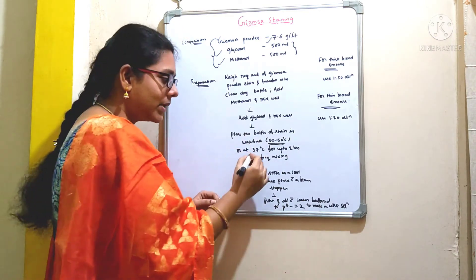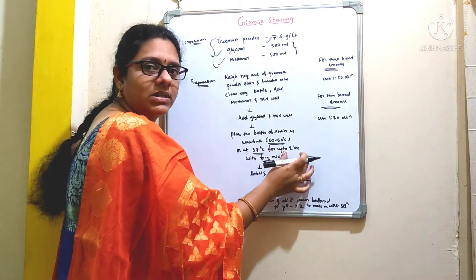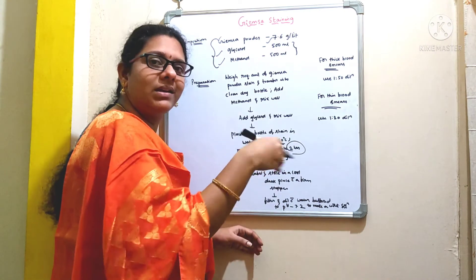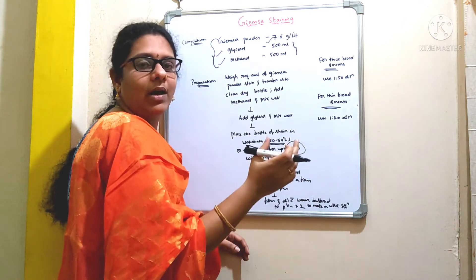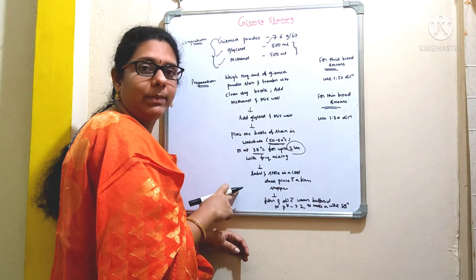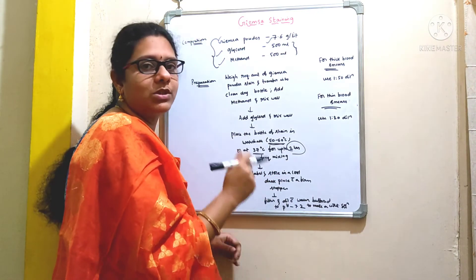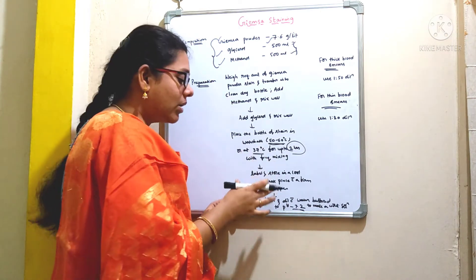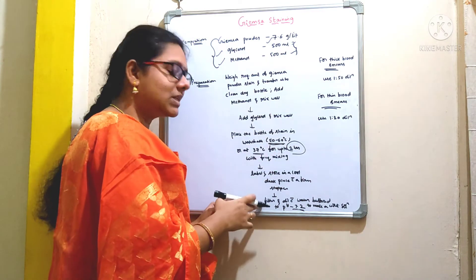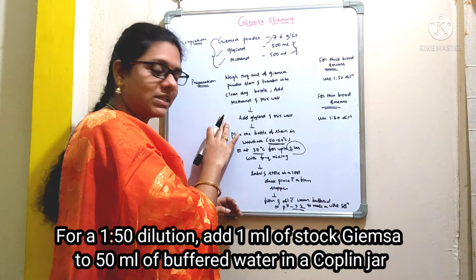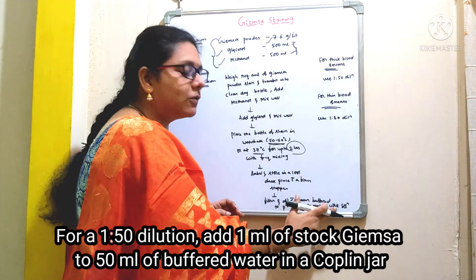Alternatively, you can maintain a temperature of 37 degrees centigrade and keep that bottle at that temperature for two hours with frequent mixing. After the two-hour period, take out the bottle from the water bath, label it, and store it in a cool dark place with a firm stopper. Then filter this solution using Whatman number one filter paper, and dilute the solution with water buffer to pH 7.2 to make a working solution.